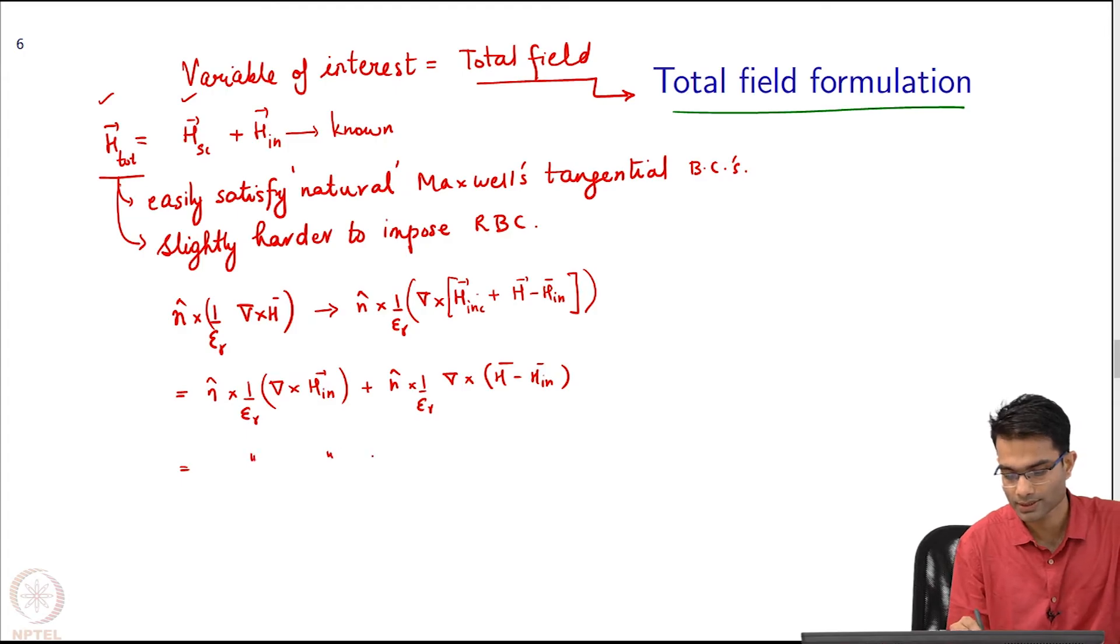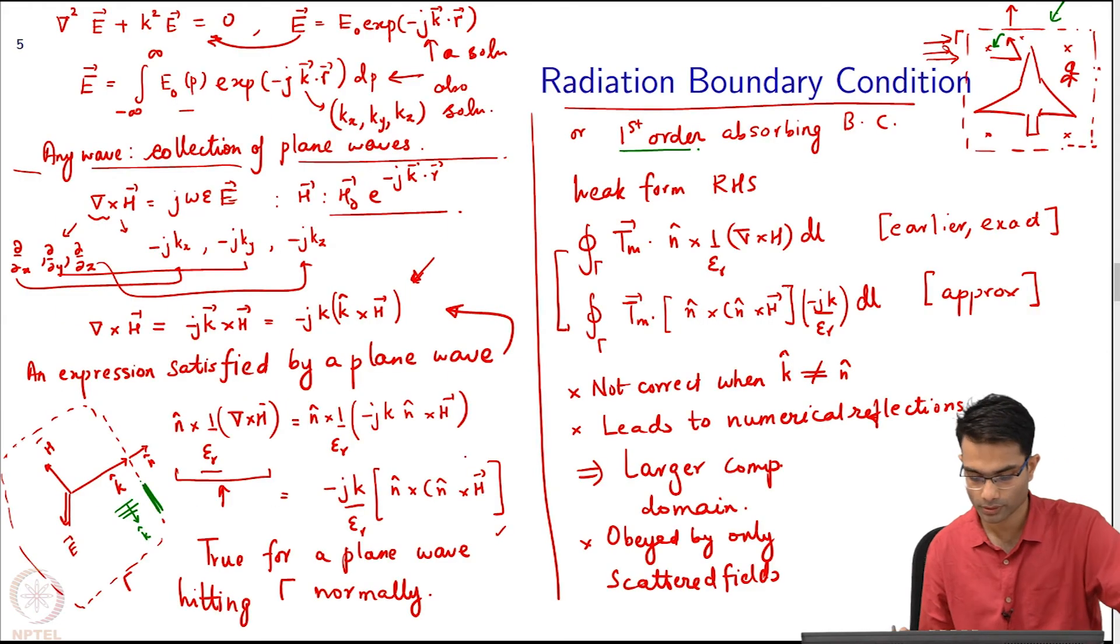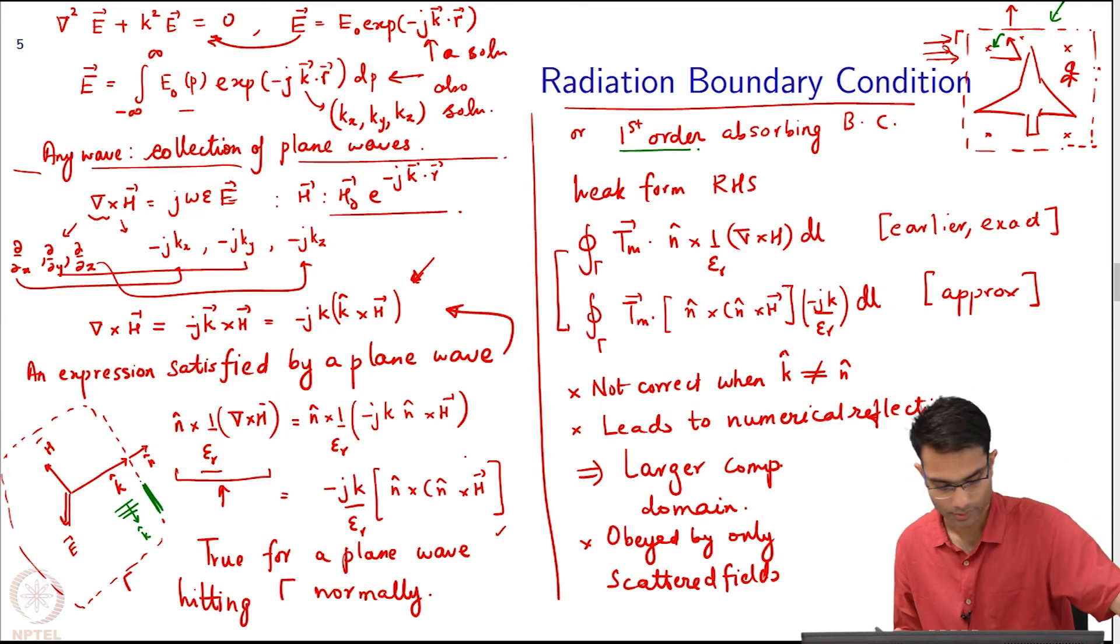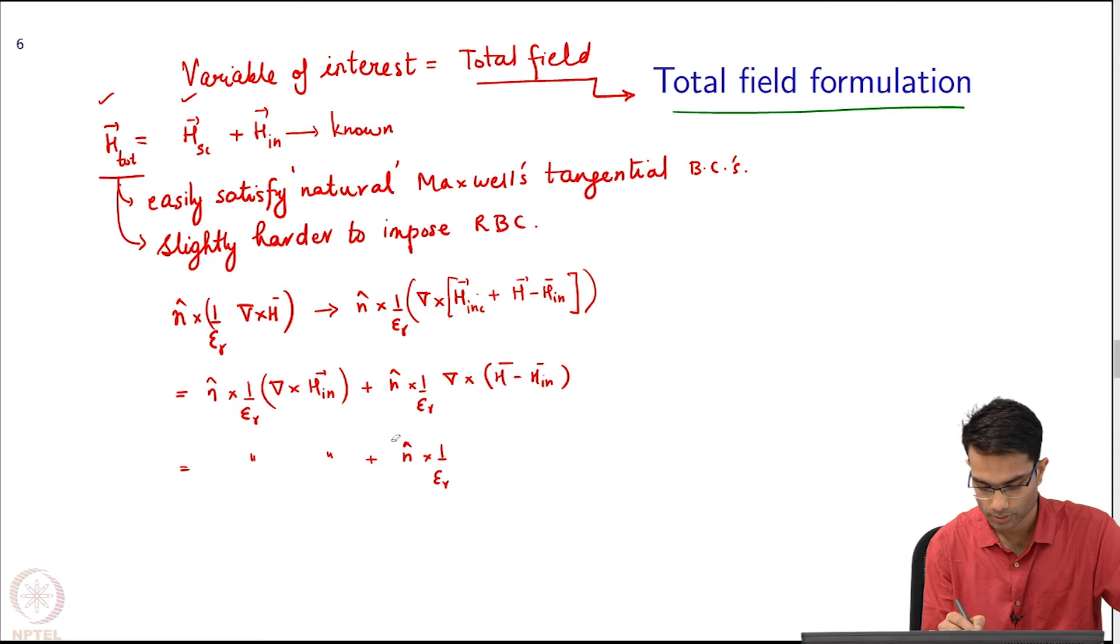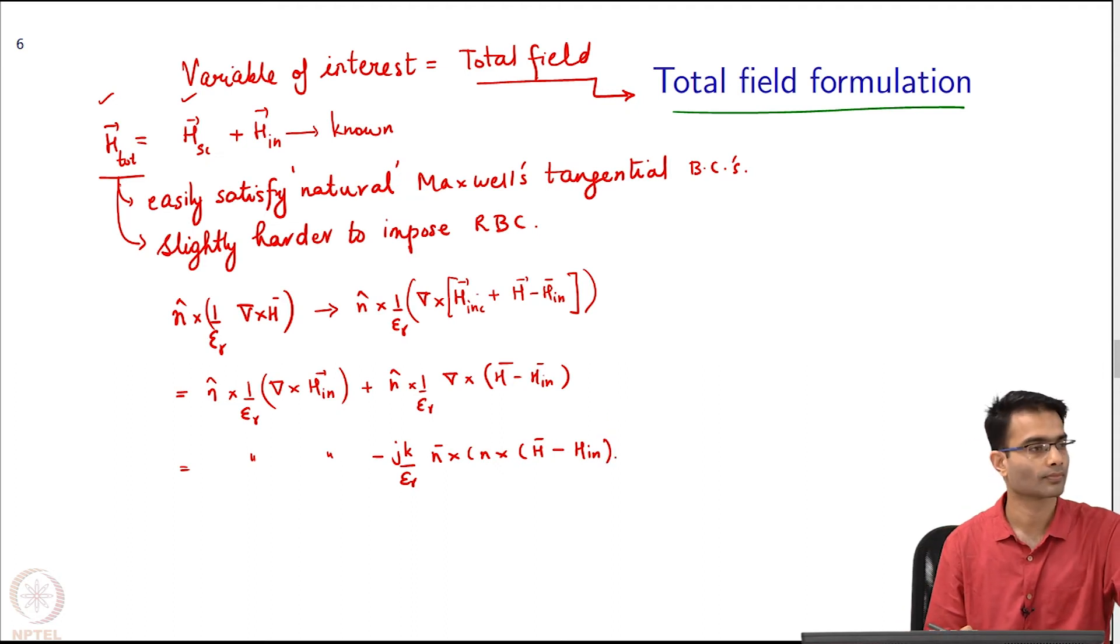So what happens as a result of that? First term becomes n cross 1 by epsilon_r del cross h incident, this term is known. And what happens over here? n cross 1 by epsilon_r, let us just write it once, h minus h incident. So this expression remains as it is and I am left over here with that approximate expression.